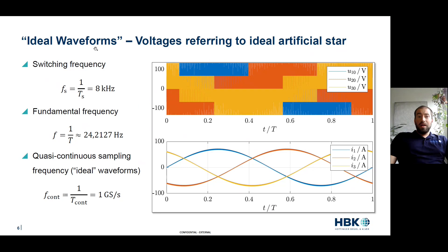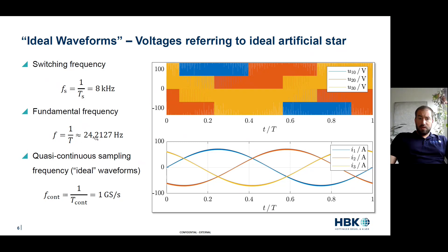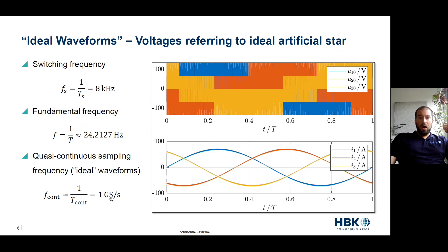We are modeling ideal waveforms with ideal switches — not a perfect simulation, but it gets the point across clearly. Our switching frequency is 8 kilohertz, as seen in the blue — we see our voltages. Our fundamental frequency is 24 hertz, which we can see more clearly in the currents. Our sampling frequency, which we're calling our ideal waveform, is one giga sample. So we have this perfect one giga sample simulation as our ideal reference.